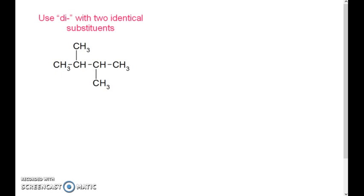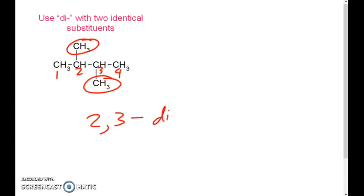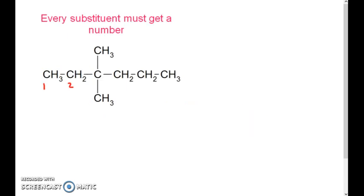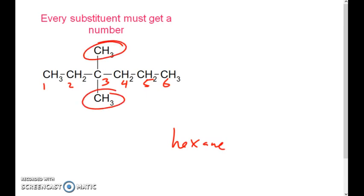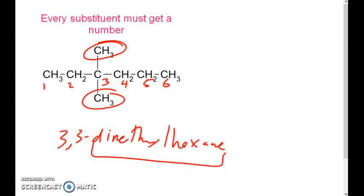For our next example, we've got a four-carbon chain. It doesn't matter whether we number it left to right or right to left — we're still going to have a methyl group on number two and on number three. Because there are two methyl groups, it's dimethyl — so 2,3-dimethylbutane. Yet again in this next case, we've got three, four, five, six carbons, so we know it's a hexane. There's a methyl group at three, so our final answer is going to be 3,3-dimethylhexane. Every substituent must get its own number.